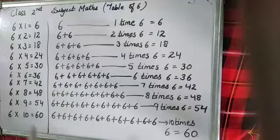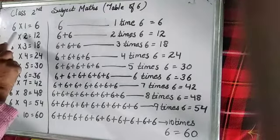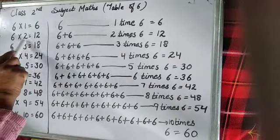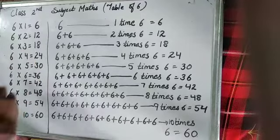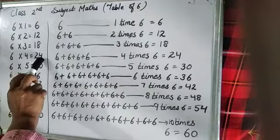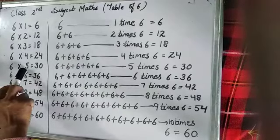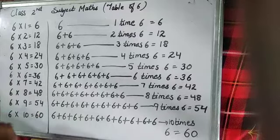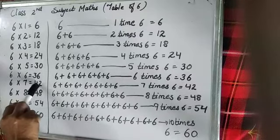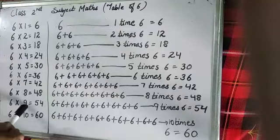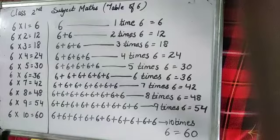Now read after me. 6 1s are 6. 6 2s are 12. 6 3s are 18. 6 4s are 24. 6 5s are 30. 6 6s are 36. 6 7s are 42. 6 8s are 48. 6 9s are 54. 6 10s are 60.